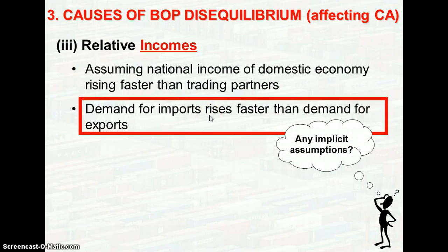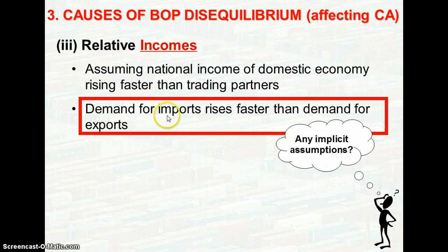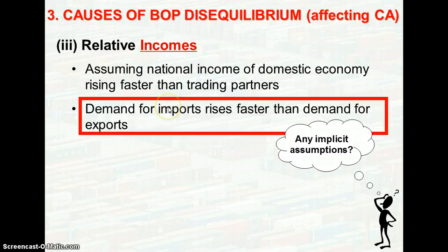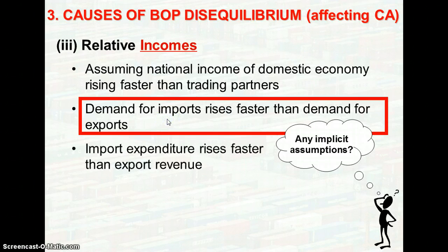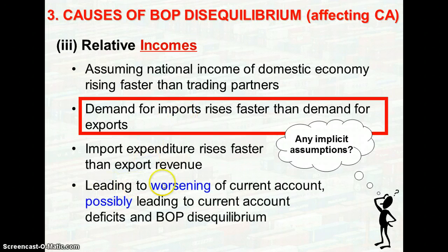What are the implicit assumptions given an increase in domestic income? The implicit assumption is that the imported goods and services are normal goods, meaning that when there is an increase in income, the demand for imports of normal goods will increase. Because of this, import expenditure will increase faster than export revenue, leading to a worsening of the current account and therefore a current account deficit and BOP disequilibrium.